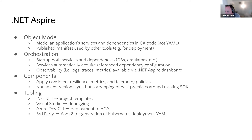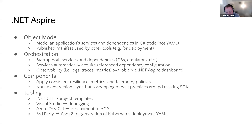The primary piece of .NET Aspire is building an application model that models your services and dependencies. If you're familiar with Project Tye, it's a similar concept — you declare your services, how they're arranged, and their dependencies. In Tye you used YAML; in .NET Aspire you use C#. That model is used by Aspire's runtime for local development orchestration, and it can also be published into a manifest used by other tools like the Azure Dev CLI to deploy to ACA.